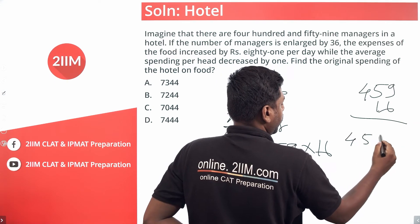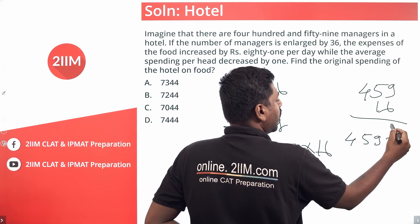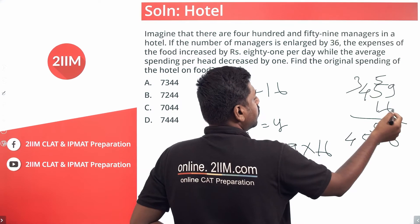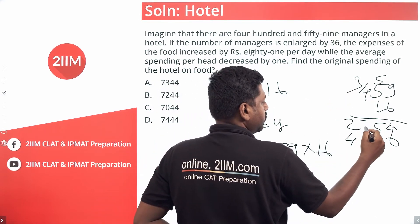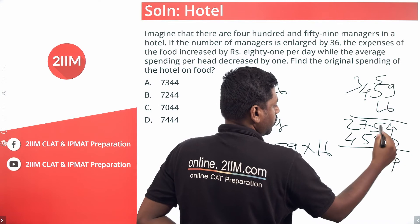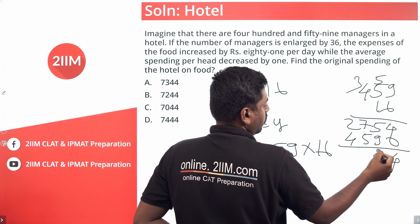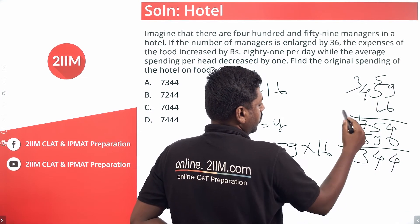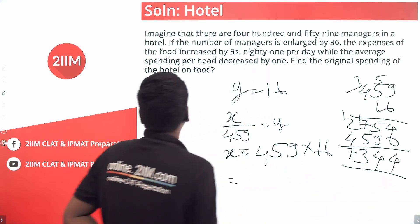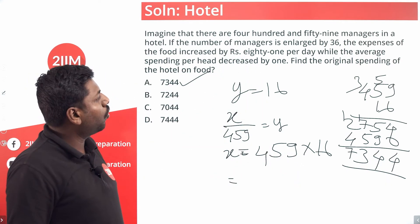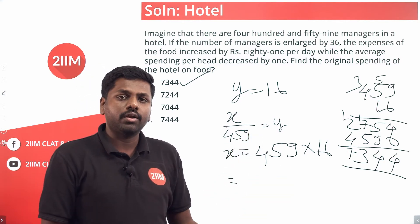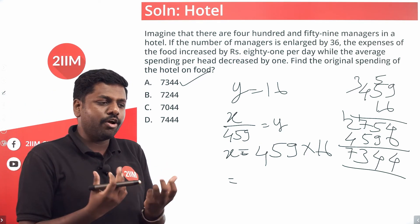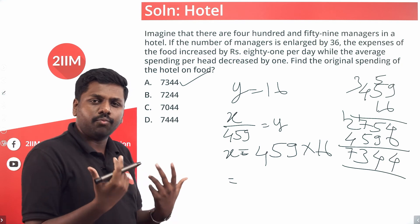Computing 459 times 16: 459 times 6 is 2754, and 459 times 10 is 4590, giving a total of 7344. So 7344 rupees is the original amount spent by the hotel on food. Interesting question — nothing fancy, but you need to combine the ideas of averages and fixed versus variable costs together in one question.